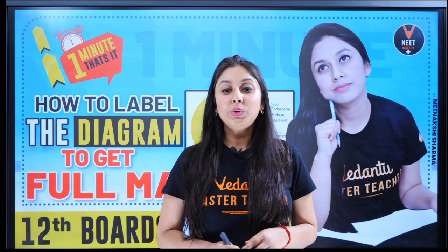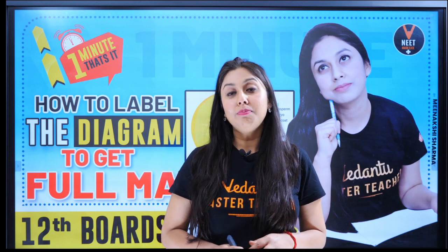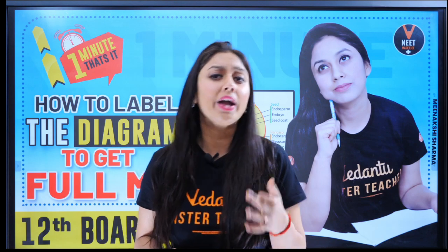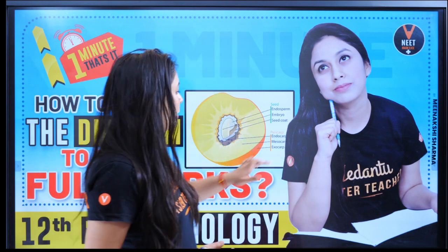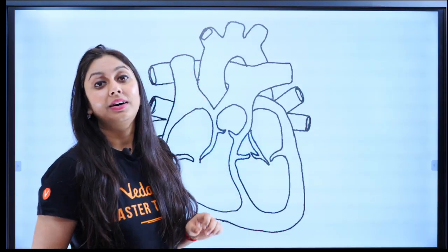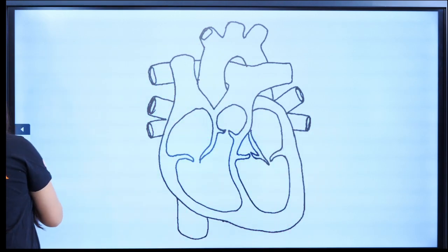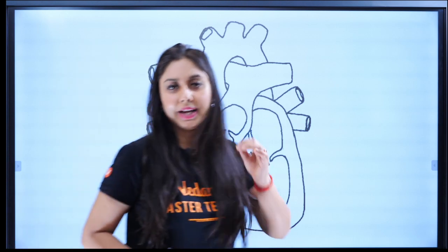Hey guys, hi everyone. So how to label the diagram to get the full marks? I think I have made a diagram but I don't know why my full marks didn't come. I did everything good but it didn't come yet. So let us just discuss why that happens. I have taken an example of a diagram which is a heart which has a lot of labeling, but you will get the idea of what I'm going to tell you.